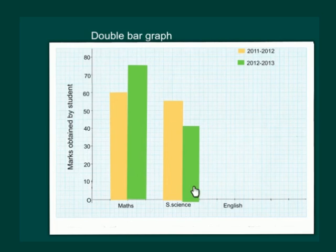Similarly he scored 55 percent marks in 2011-2012, but he could only score 40 percent marks in 2012-2013 in social science. While in English both the years 2011-2012 and 2012-2013 he scored same marks, that is 55% marks.